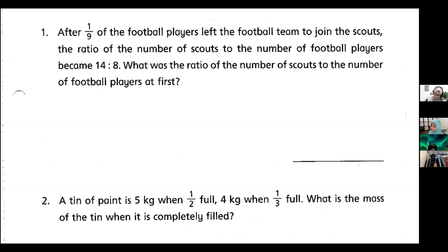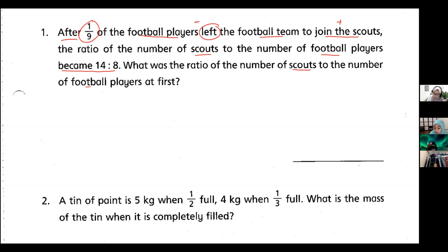After one-ninth of the football players left the football team to join the scouts, they left the football team — that's minus — then they joined the scouts — that's plus. The ratio of scouts to football players became 14 to something. What was the ratio of scouts to football players at first?